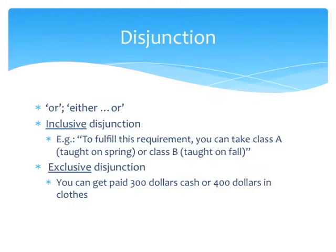In general, there are two ways of understanding a disjunction: an inclusive one and an exclusive one. An inclusive disjunction is true if at least one of the disjuncts is true, and this includes the case in which both are true. An example of the inclusive use: suppose your academic advisor tells you that to fulfill a graduation requirement, you can take class A, taught in spring, or class B, taught in fall. If you take one and pass it, you'll graduate. But if you decide to take both, that's fine — you will graduate too. So in this inclusive sense, the truth of the disjunction is guaranteed if at least one disjunct is true.